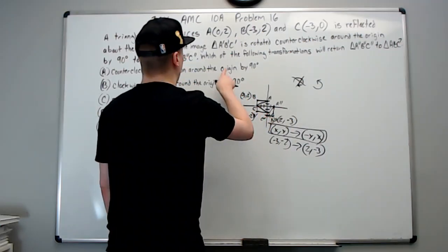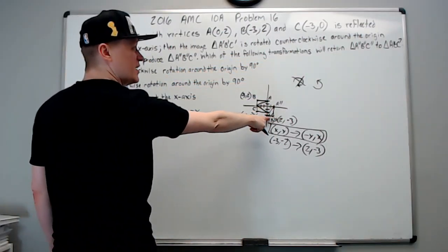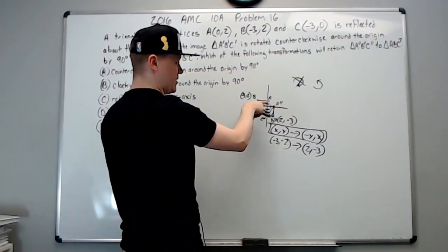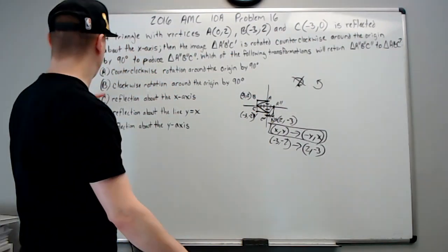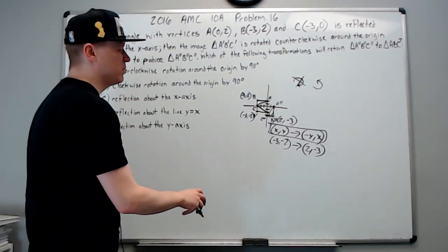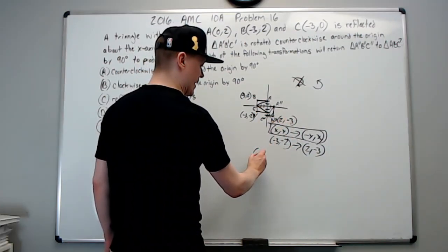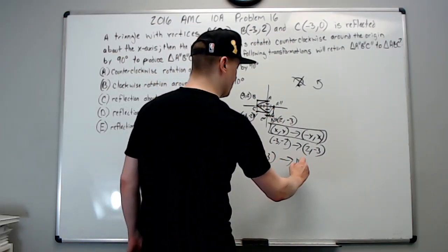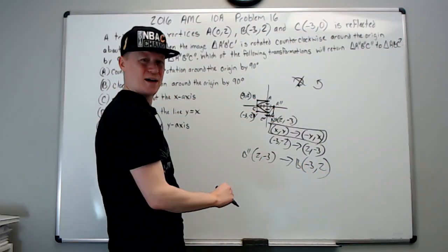Where are we at now? Which of the following transformations will turn this triangle back to triangle ABC, the original one? Let's just focus on what happens to B. B goes like this. It's currently at (2,-3) - that's B double prime. We need it to become point B, which is (-3,2). Well, this is just a switching of the x and y values.